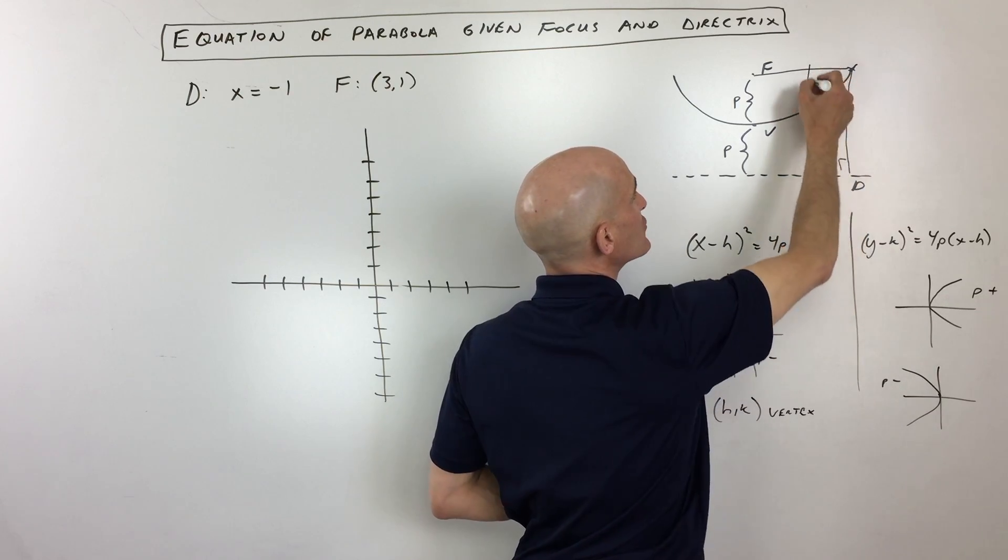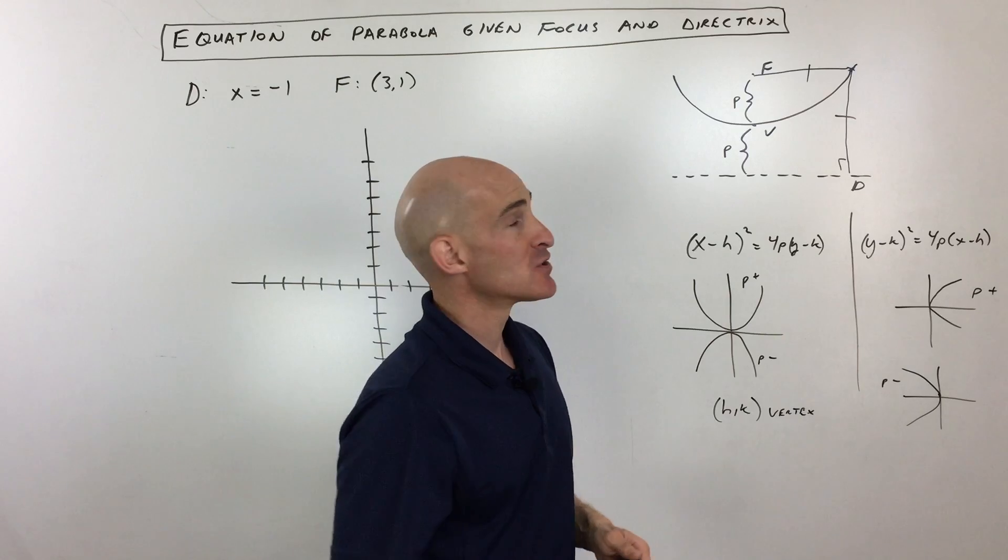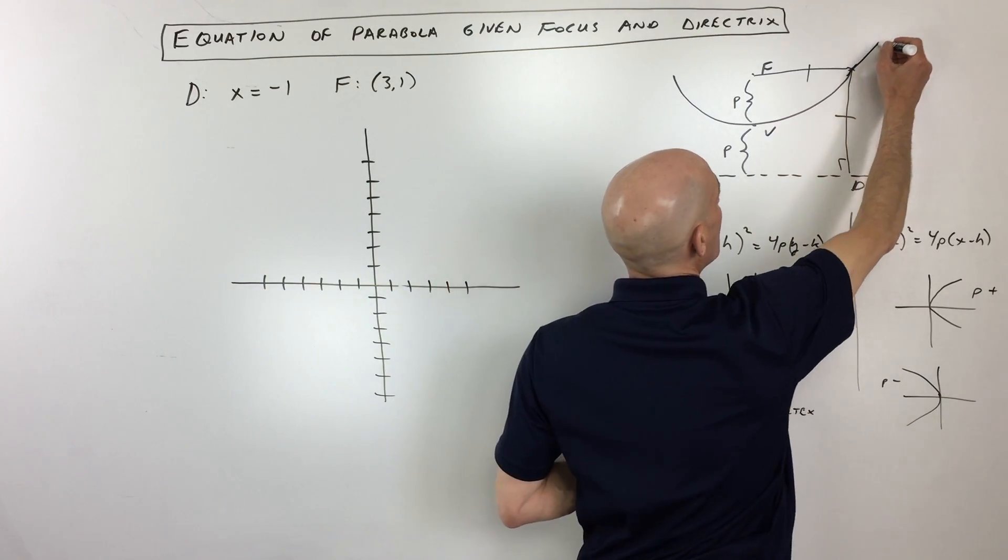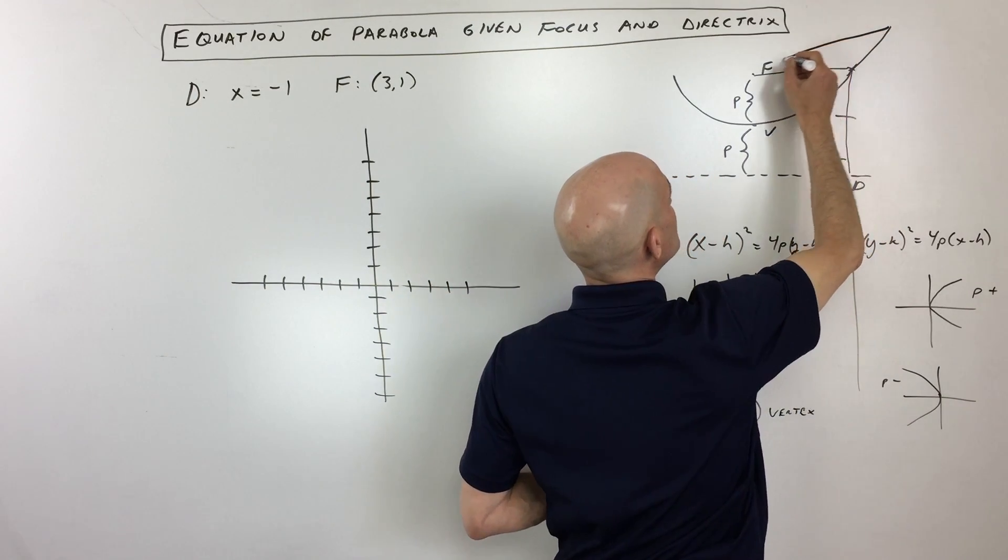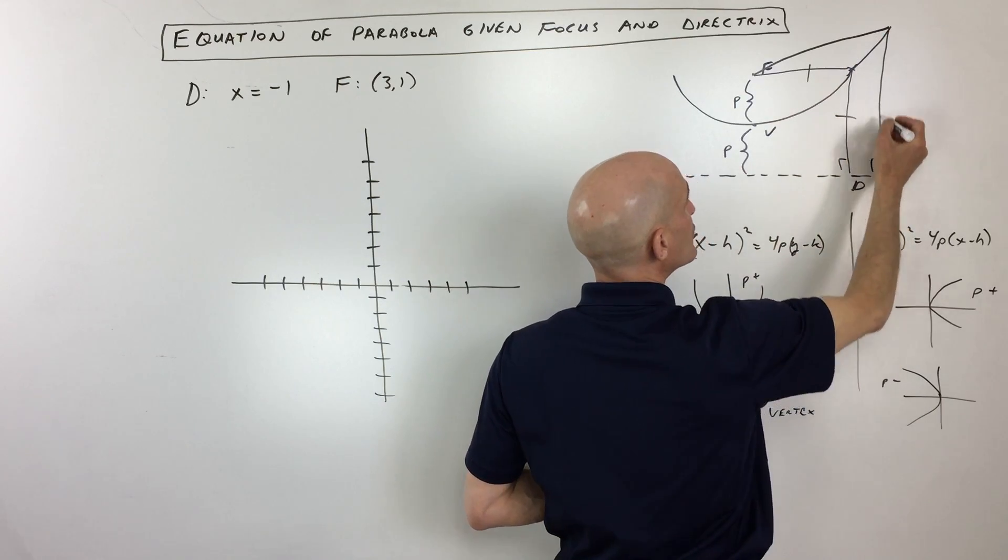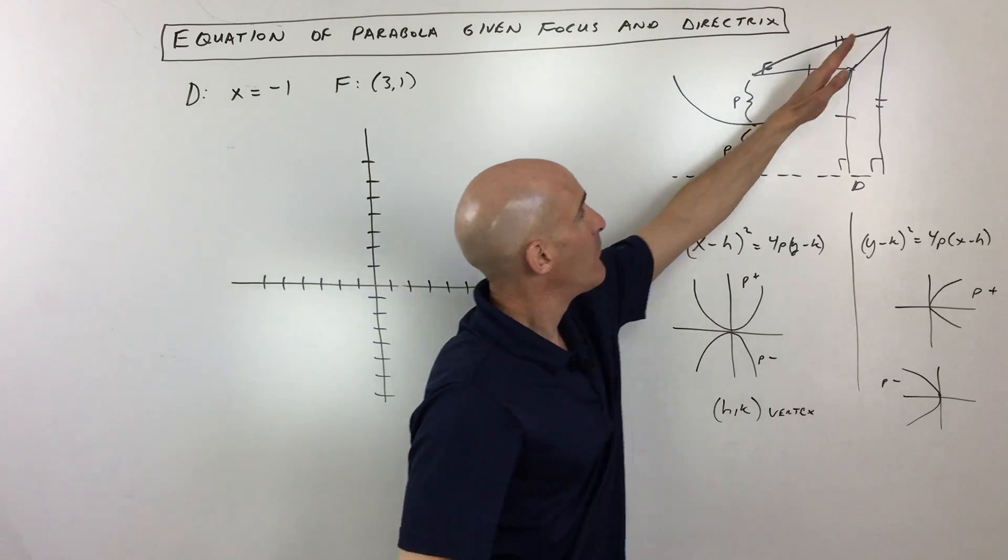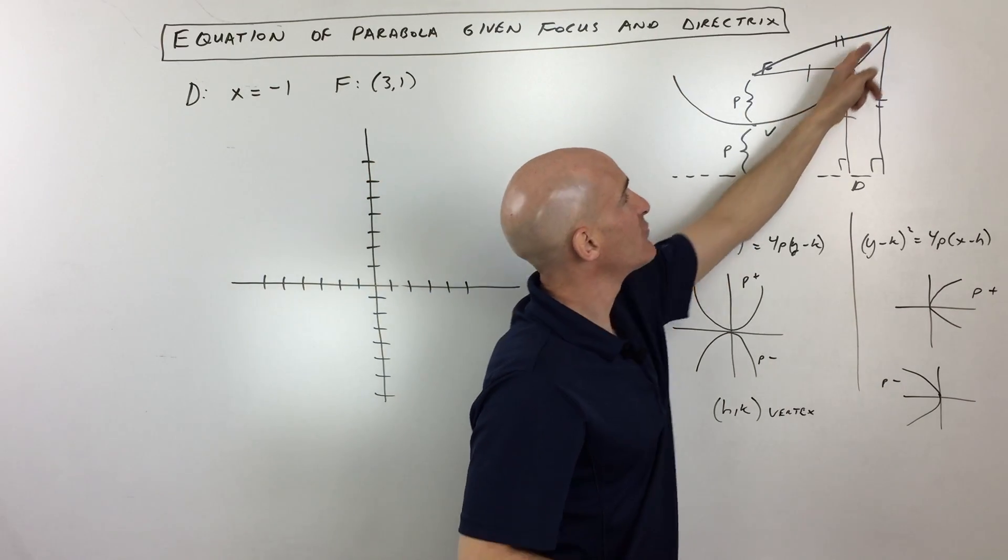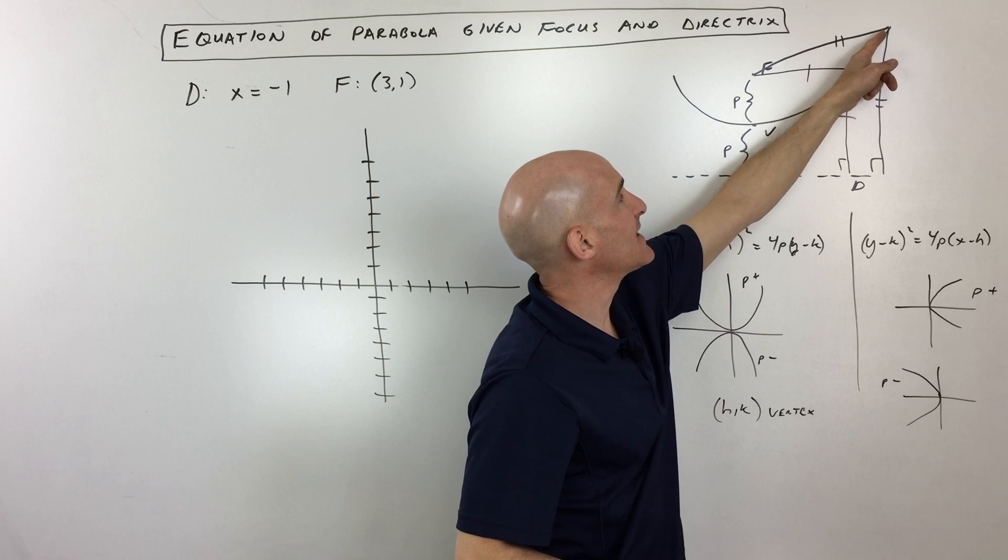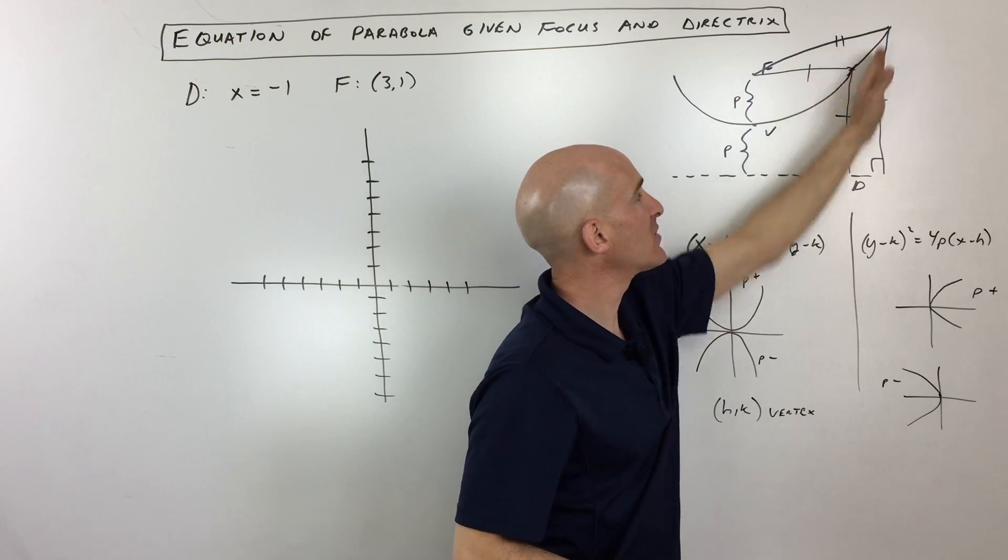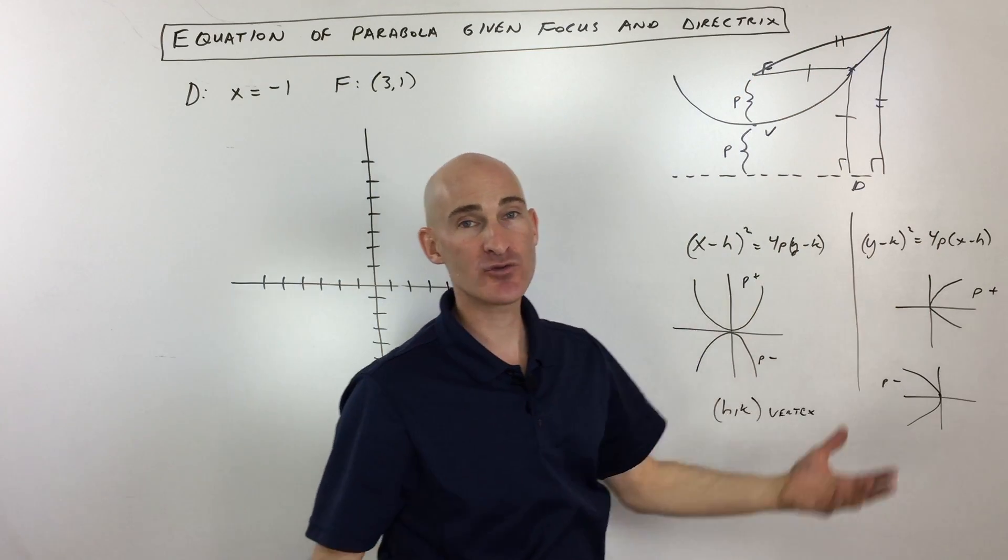So the idea is if you go further out on this parabola, you can see the distance to that focus is getting longer, but so is that perpendicular distance to the directrix. Those points on the parabola, this u-shaped graph, they're always going to be equidistant from a given point called the focus and a given line called the directrix.